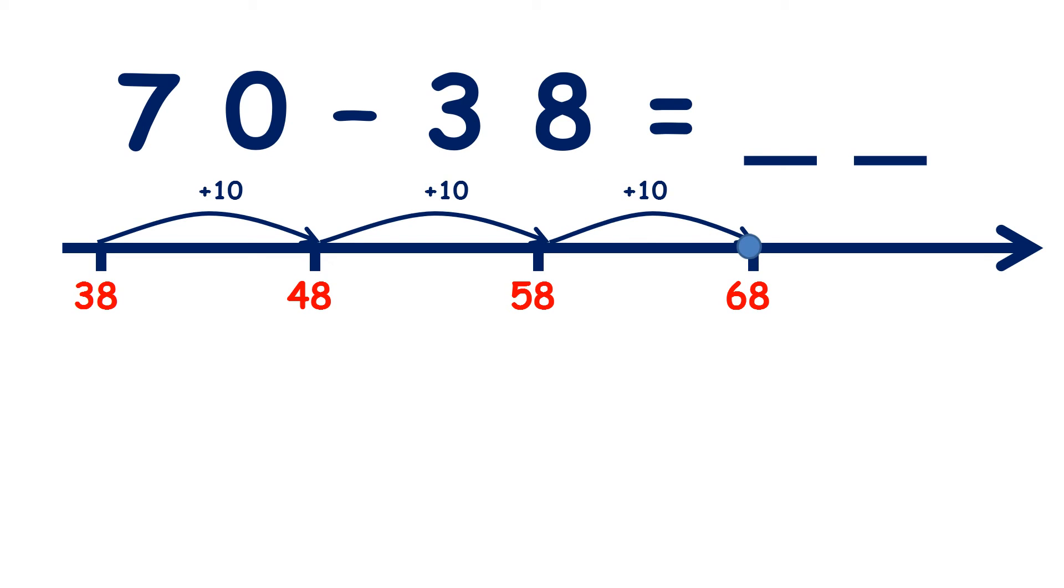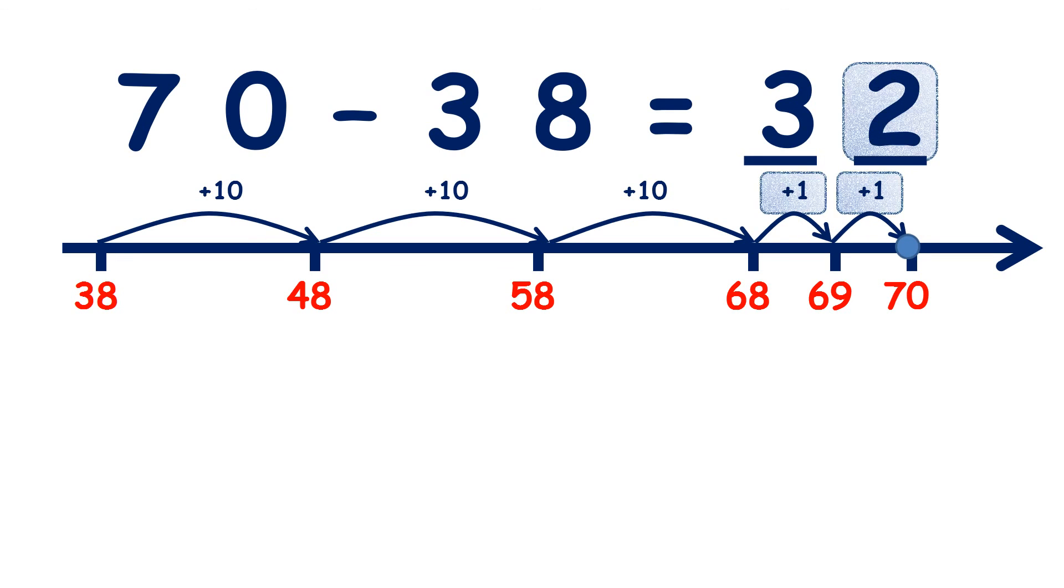And now we can count on in units: 69, 70. So we counted on two units to get to 70. So the difference between 70 and 38 is 32.